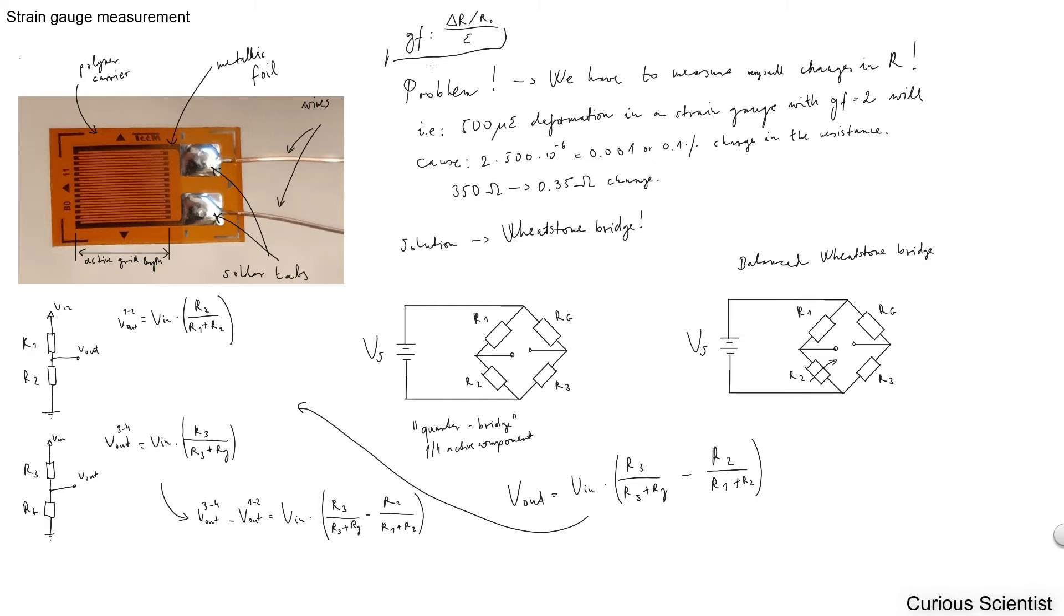if we measure 500 microstrain deformation with a strain gauge with gauge factor 2, then the change in the resistance will be just 0.1 percent. If we take a regular strain gauge with 350 ohm resistance, then the resistance change will be only 0.35 ohms. Regarding resistance, this thing is very difficult to measure.